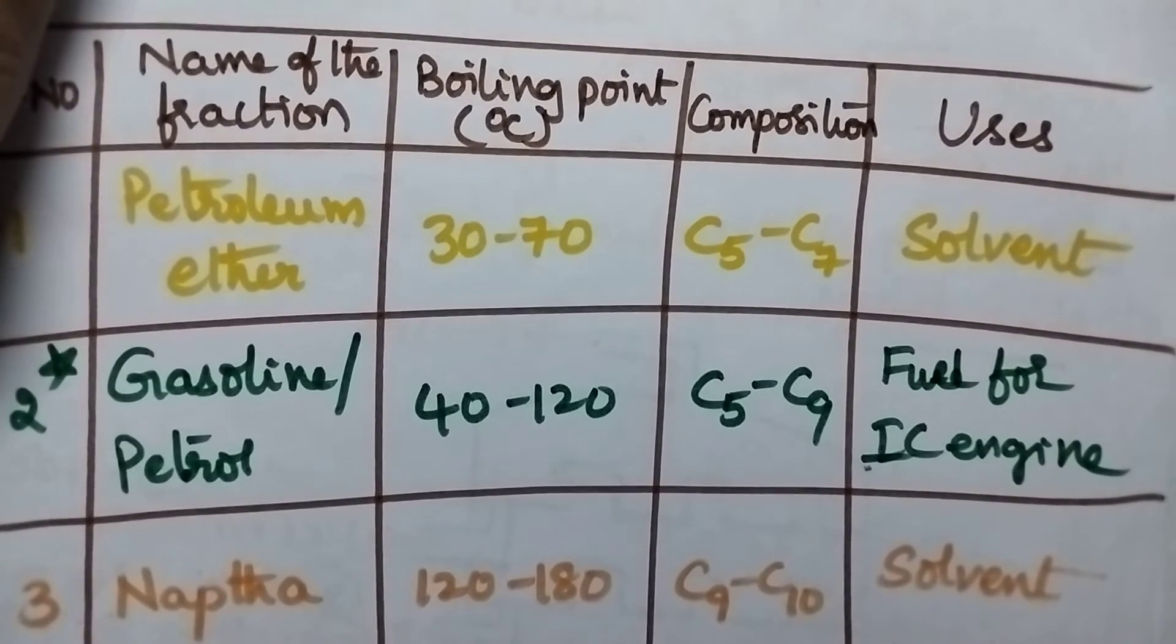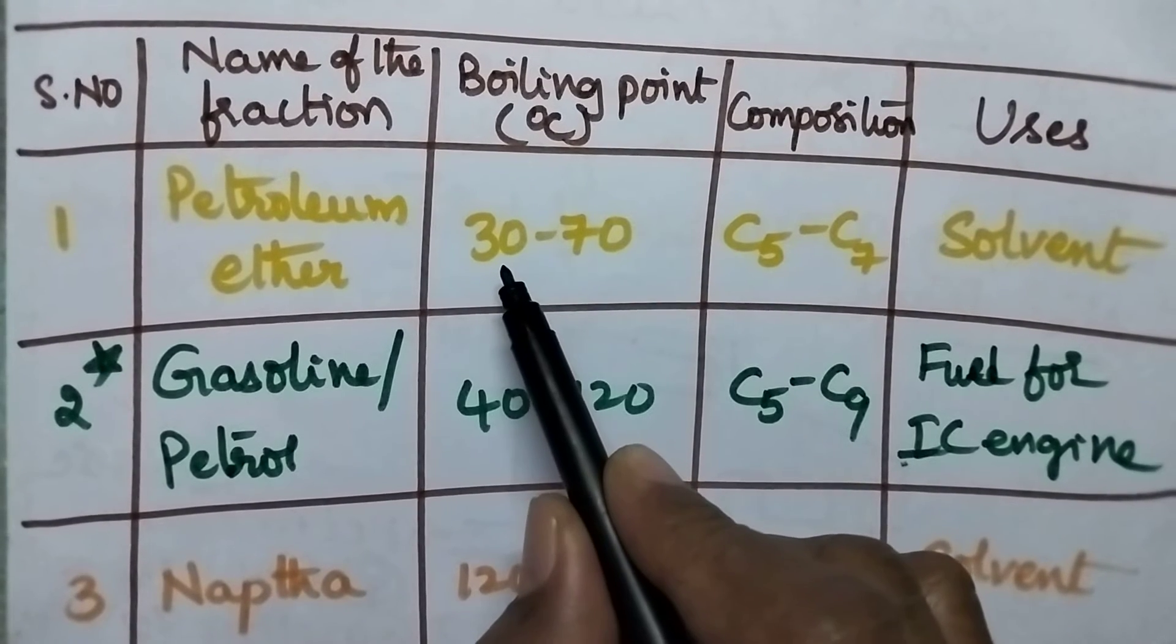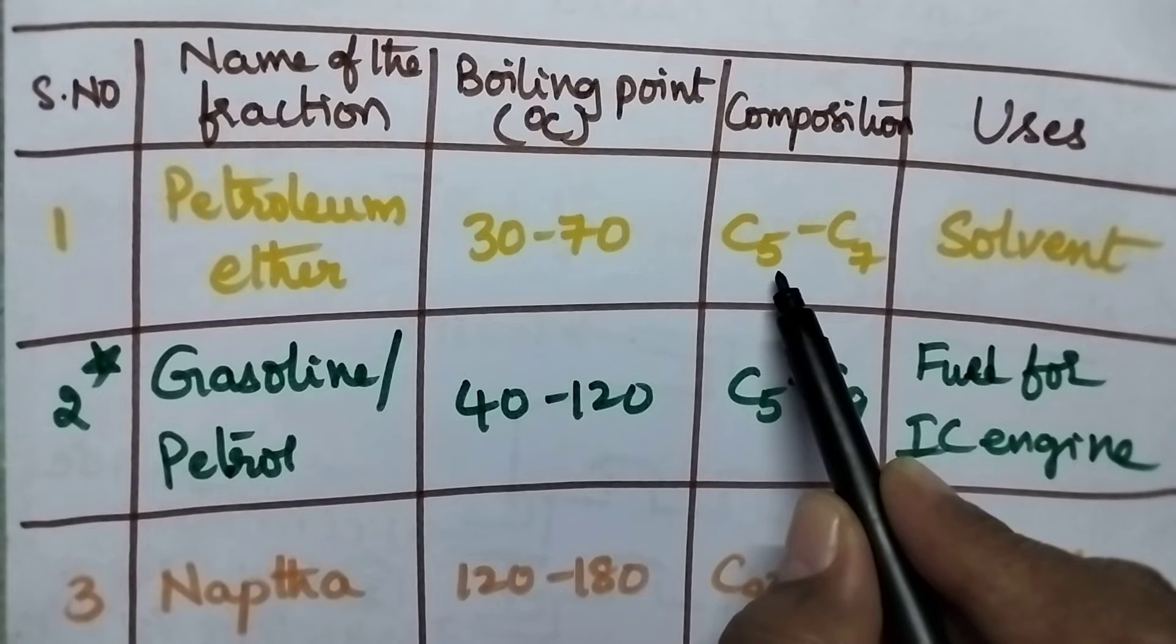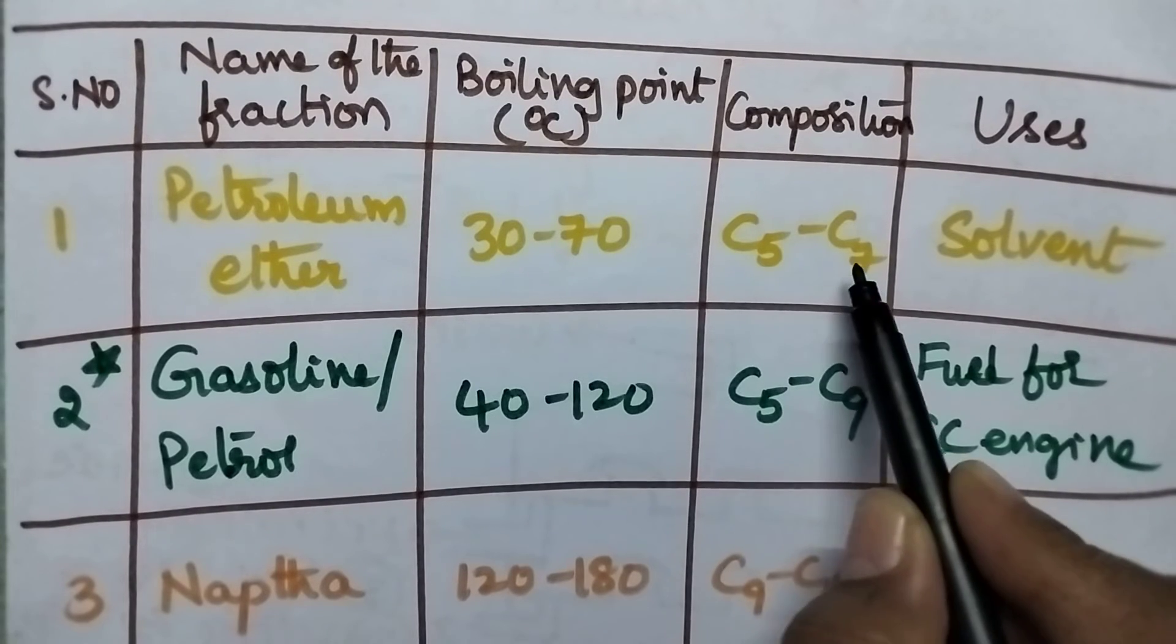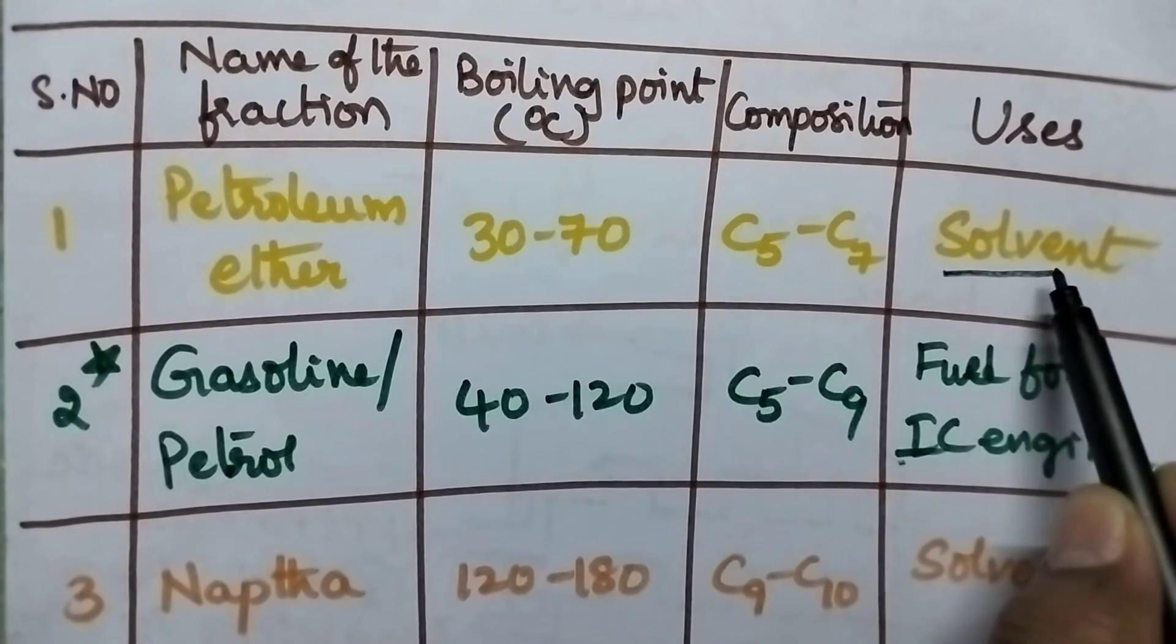Petroleum ether has a boiling point around 30 to 70 degree centigrade and it consists of hydrocarbons ranging from C5 to C7. The major use of petroleum ether is as a solvent.